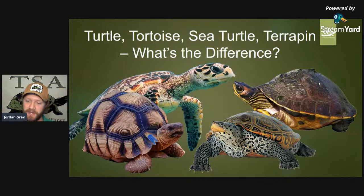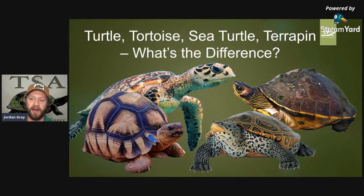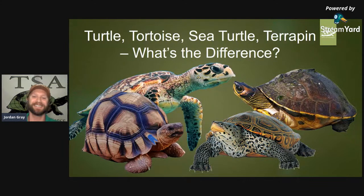Pelf mentions Batagur affinis affinis and Batagur affinis edwardmoultoni — two subspecies of the Southern River Terrapin, one of the most endangered turtles in the world. Pelf does incredible work for this species in Malaysia: the Western Malay River Terrapin and the Eastern Malay River Terrapin. No matter what you call any chelonian, if you call something a turtle, you're being correct.